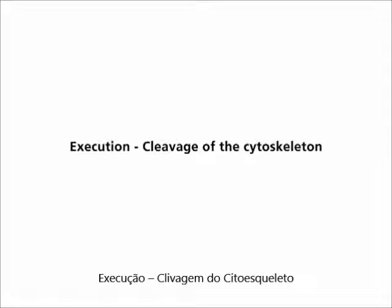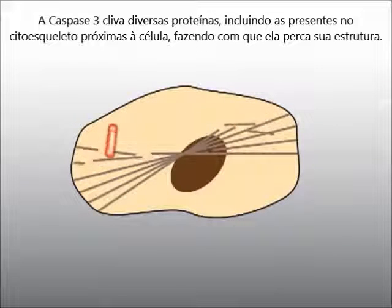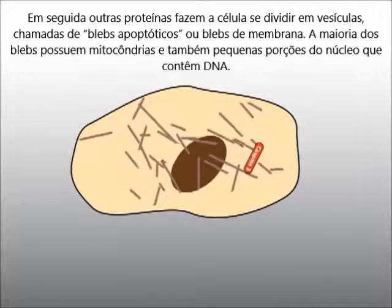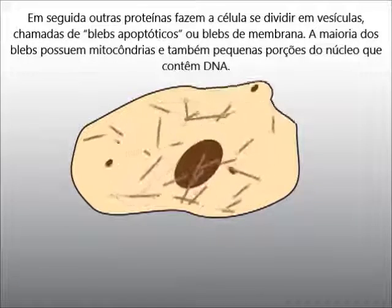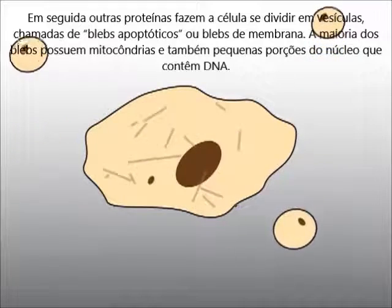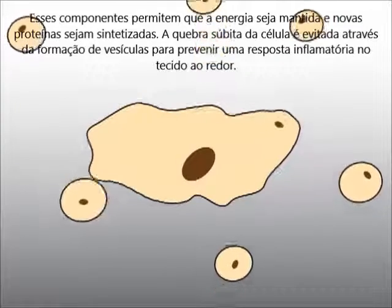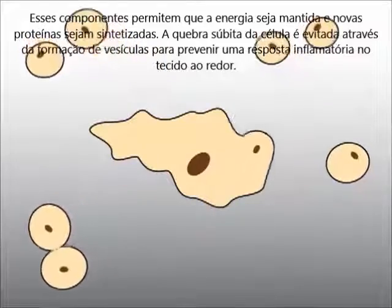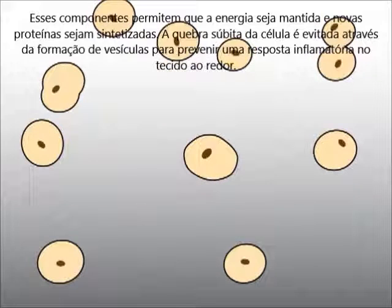Execution: cleavage of the cytoskeleton. Caspase 3 cleaves many other proteins, such as proteins of the cytoskeleton, causing the cell to lose its structure. Next, other proteins cause the cell to collapse into vesicles, the so-called apoptotic blebs. Most blebs contain mitochondria and portions of the nucleus including DNA. These components allow energy to be maintained and new proteins synthesized, avoiding rapid break-up of the cell and preventing an inflammatory reaction in the surrounding tissue.